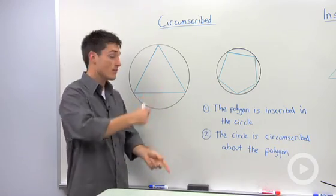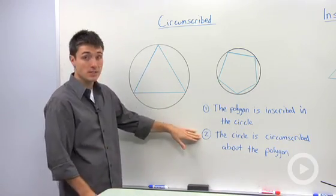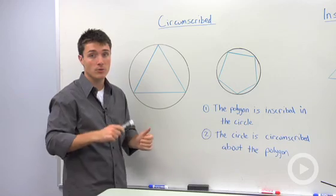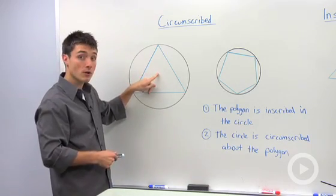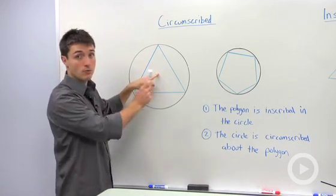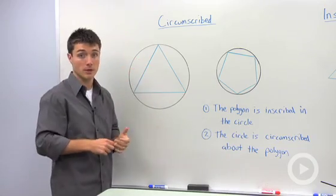The reverse of that is to say the circle is circumscribed about the polygon. So if you're wondering, this is formed by the point of concurrency called the circumcenter, which is formed by the three perpendicular bisectors.